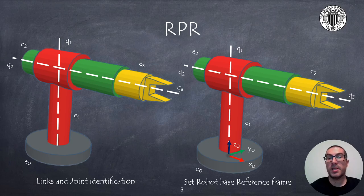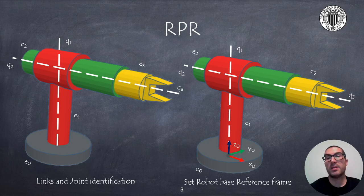Next we must set the position and orientation of the reference frame associated with the robot base. The only requirement is that Z0 passes through joint 1. In our case we have positioned this frame at the bottom of the reference link.